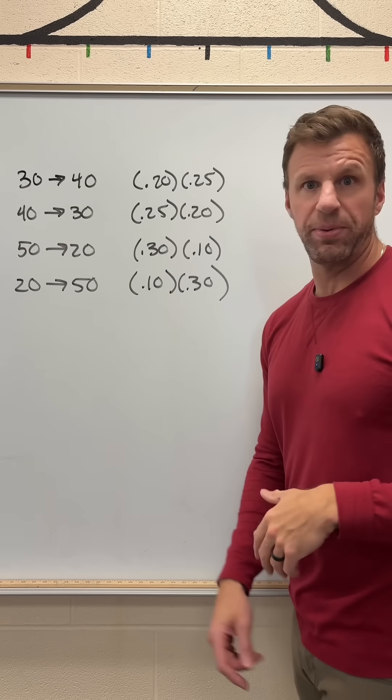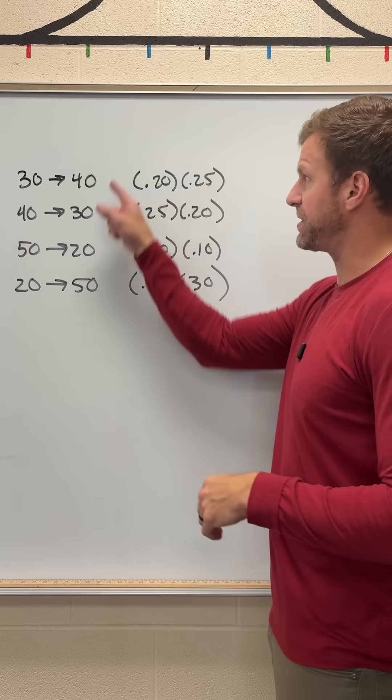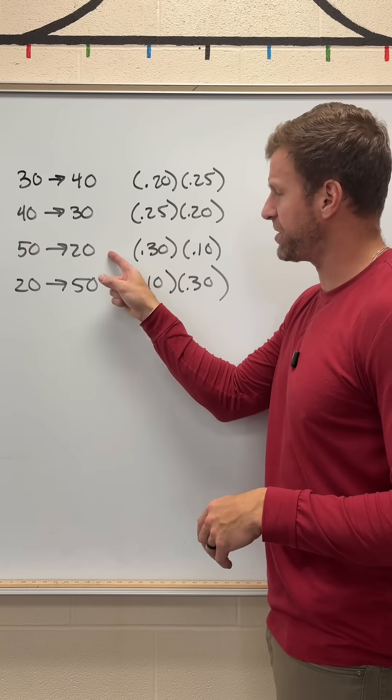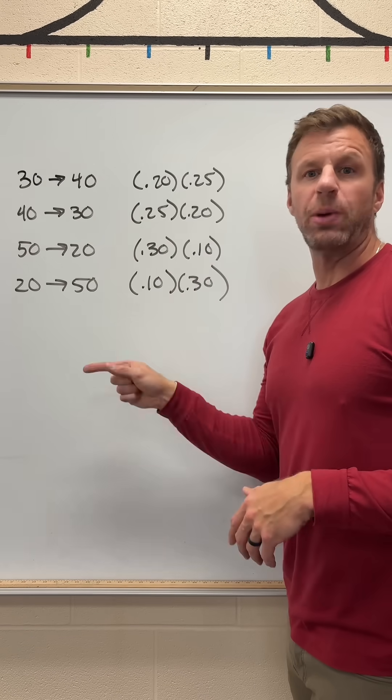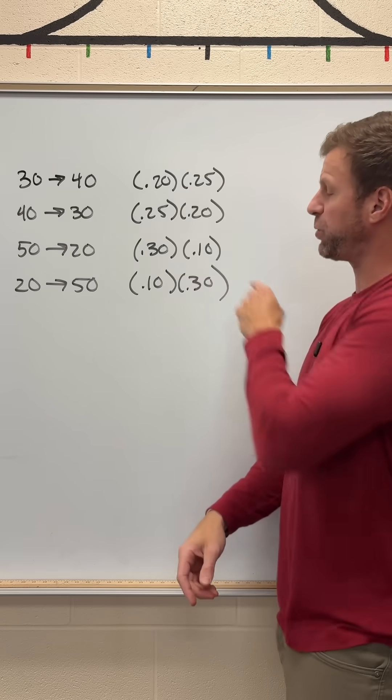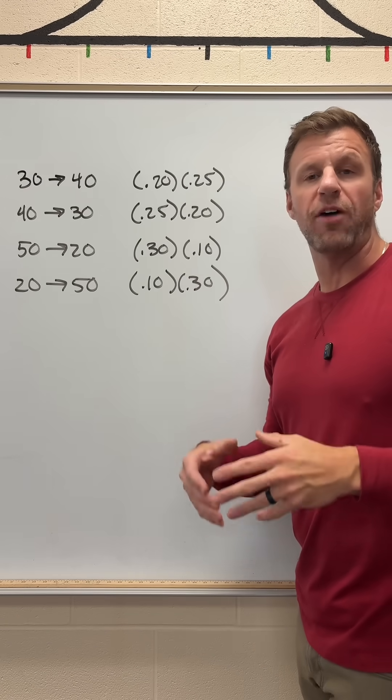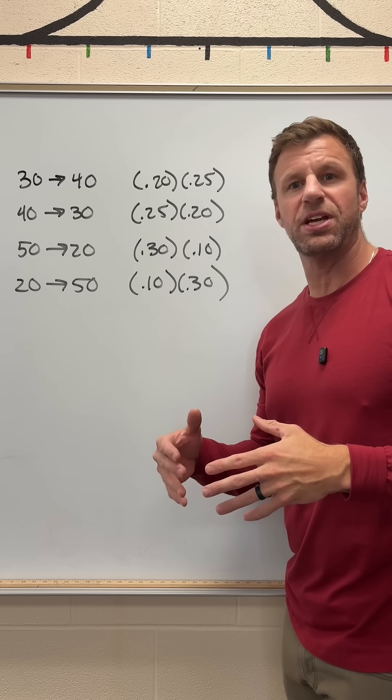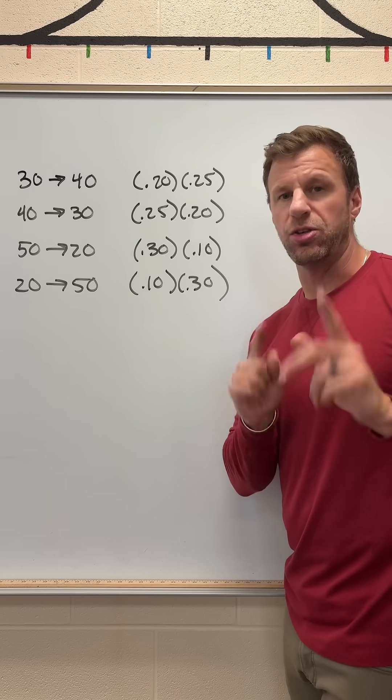So now we have to add all these together because they can't all occur at the same time. It's this outcome, or this outcome, or this outcome, or this outcome. So we add those probabilities together: 0.05, 0.05, 0.03, 0.03, for a grand total of 0.16. There's a 16% chance that if you play this game twice, you'll get a score of 70.